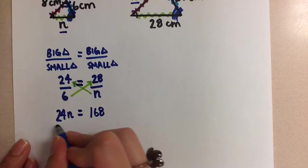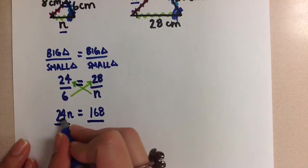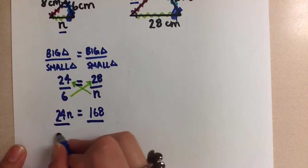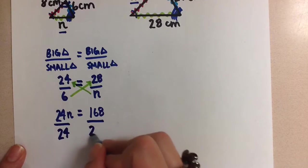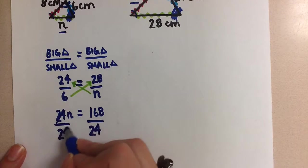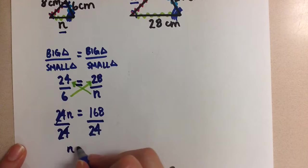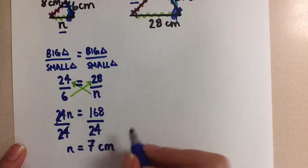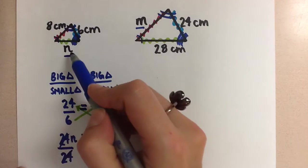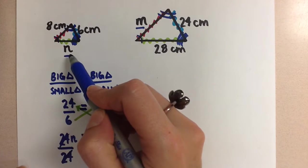Now to solve this, we need to divide both sides by the coefficient of the variable. So in this case, it's 24. These cancel, and we're left with n equals 7 centimeters. So that is the missing side here, 7 centimeters.